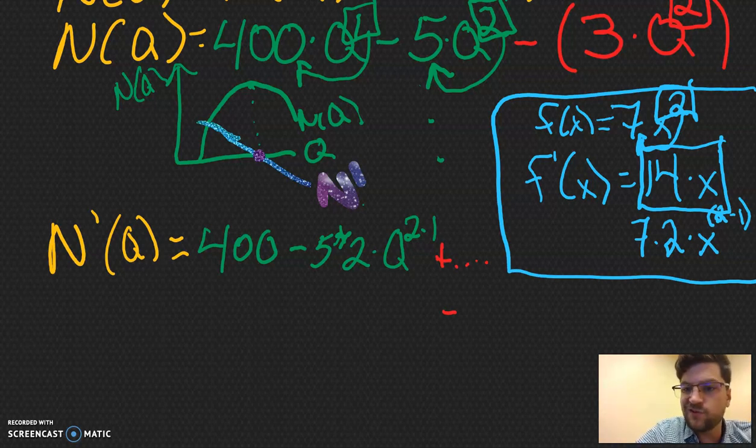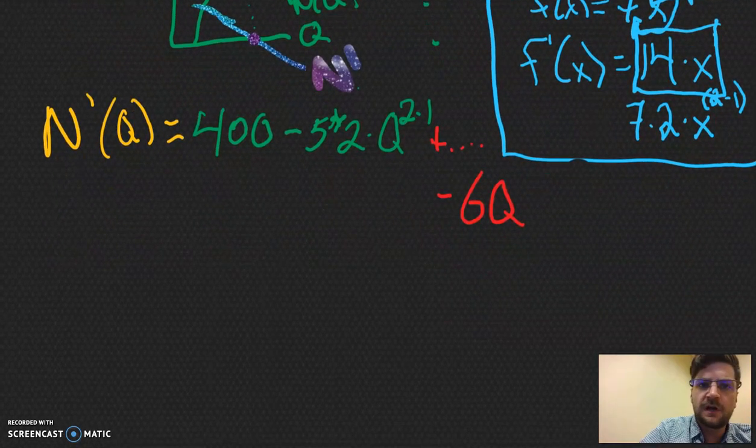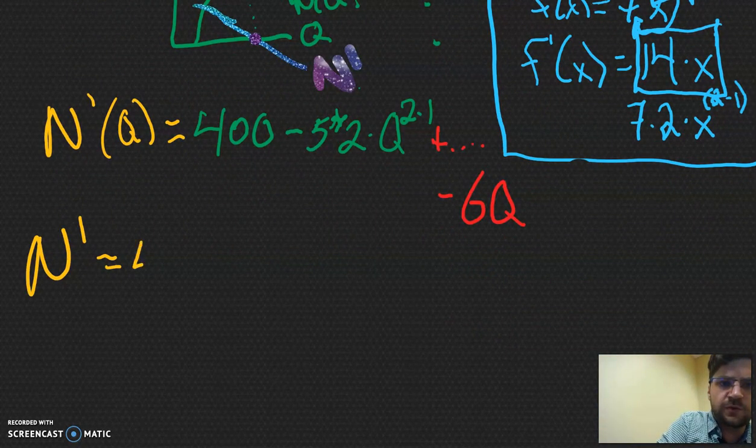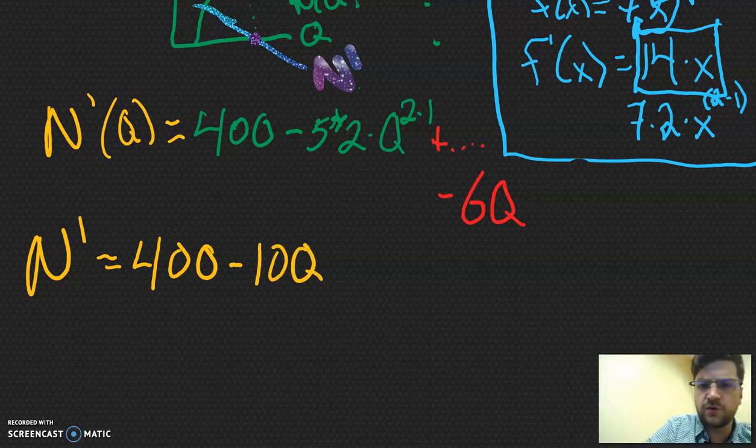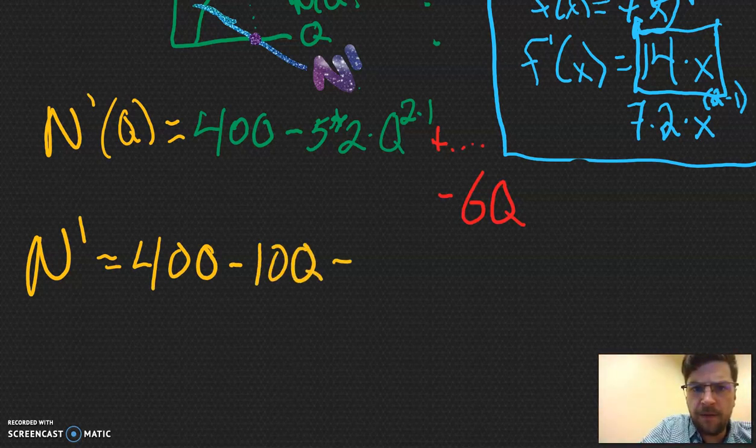And then again, we're going to do this power rule or the shortcut is really just multiply this by 2 and then get rid of the exponent. So it's going to be minus 6q to the 2 minus 1, which as we all know, we can just do the math. So 2 minus 1 is just going to be equal to q to the 1. And when we have something to the 1 power, we don't need to put to the 1 power. We can just say minus 6q. So now at this point, we have the equation. It's a little messy. So we might want to just kind of clean it up a little bit. So it's going to be n prime is equal to 400 minus 10q minus 6q. Make sense to everybody so far?